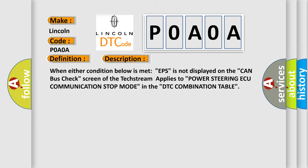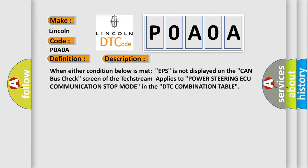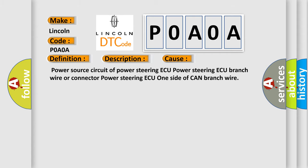This diagnostic error occurs most often in these cases: Power source circuit of power steering ECU, power steering ECU branch wire or connector, power steering ECU one side of CAN branch wire.